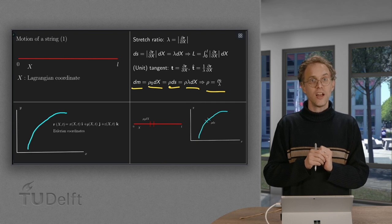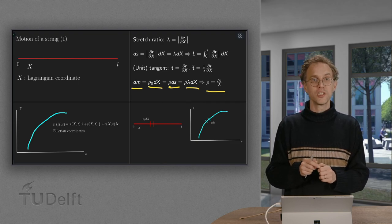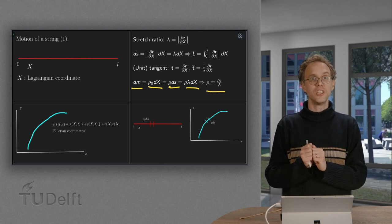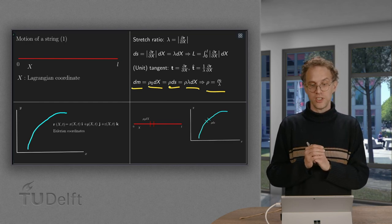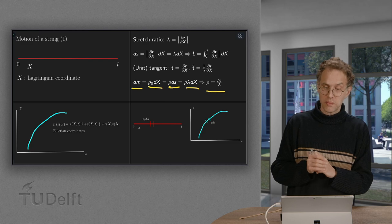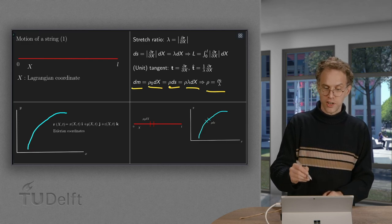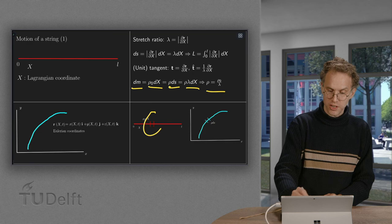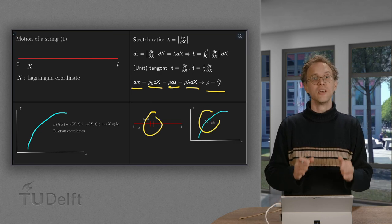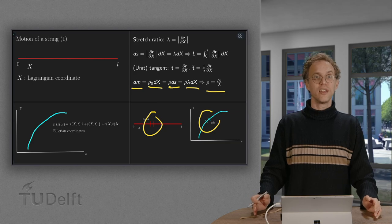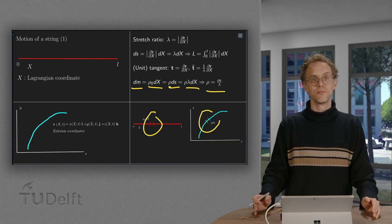So there we have our important players. The stretch ratio, lambda norm of dr/dx. The unit tangent, dr/dx over lambda. And finally using conservation of mass, dm equals rho_0 dx. So those are our three main ingredients.